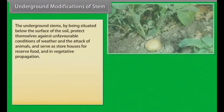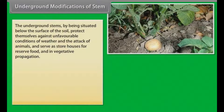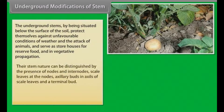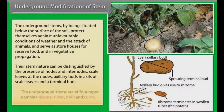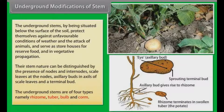The underground stems, by being situated below the surface of the soil, protect themselves against unfavorable conditions of weather and the attack of animals, and serve as storehouses for reserve food and in vegetative propagation. Their stem nature can be distinguished by the presence of nodes and internodes, scale leaves at the nodes, axillary buds in the axils of scale leaves, and a terminal bud. The underground stems are of four types: rhizome, tuber, bulb, and corm.